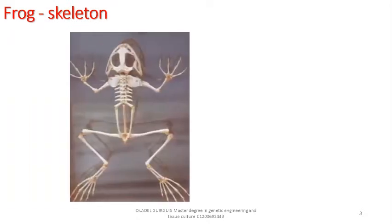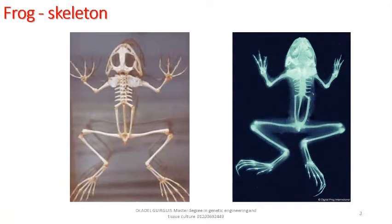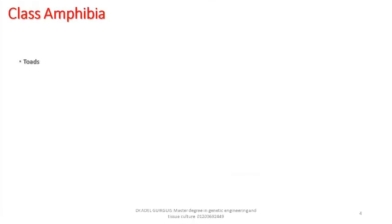Class amphibia. They are vertebrate animals. Examples include frogs, toads, salamanders, and newts.